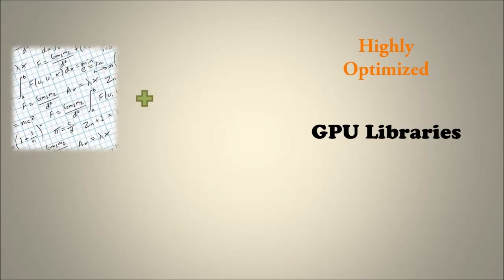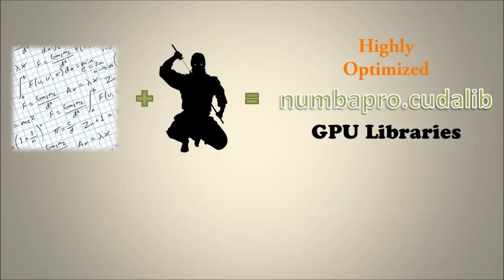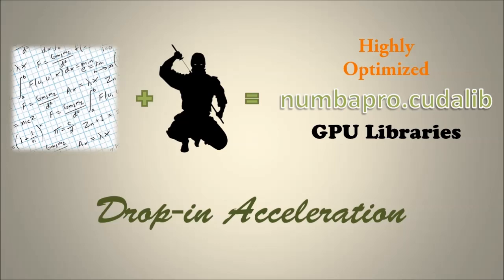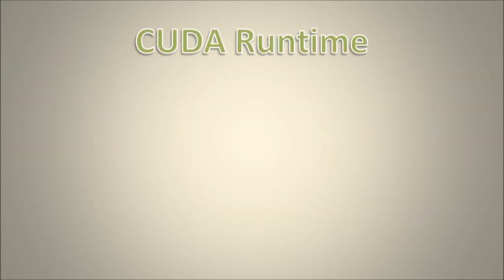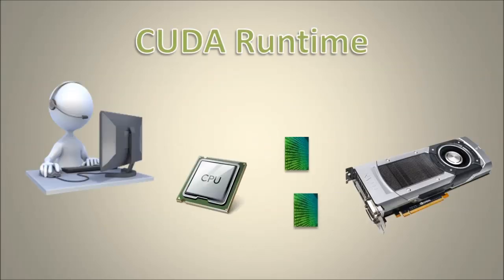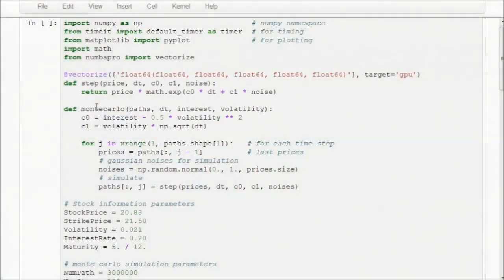GPU libraries allow us to access highly optimized algorithms without having to write any of that code ourselves. We call this Drop-In Acceleration. In addition, by using the CUDA Runtime library, we can manage GPU data movement directly. The example we're going to be working with today is a simple Monte Carlo Options Pricer, and I'll be demoing this CudaCast using an IPython notebook.